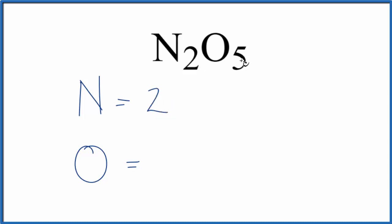Put a two there. Five means we have five oxygen atoms and the total number of atoms for N2O5 would be five plus two, so we'd have a total of seven atoms in N2O5 dinitrogen pentoxide.